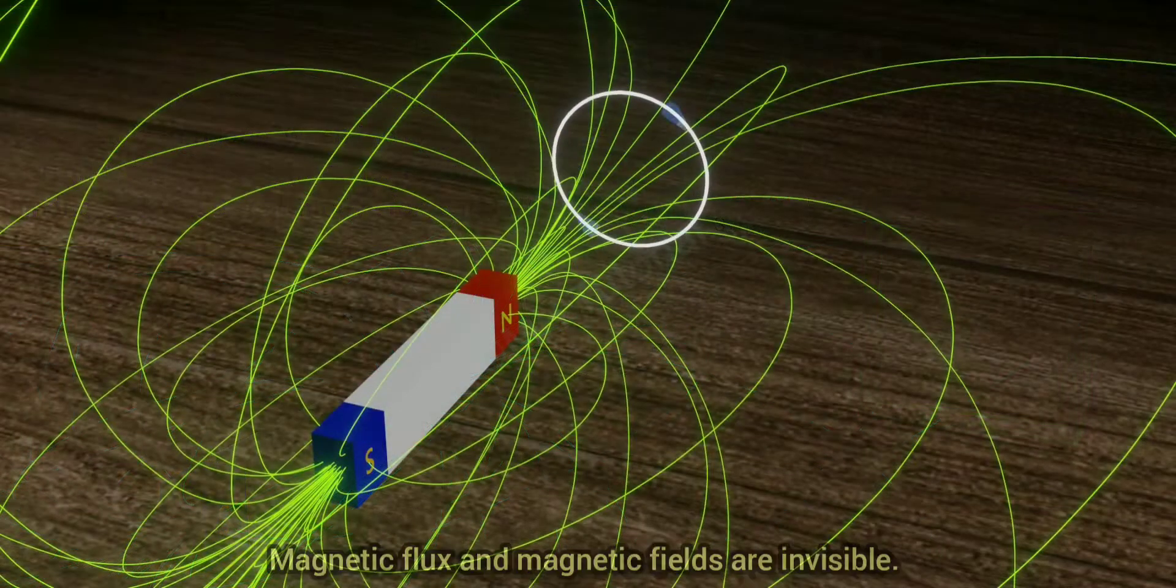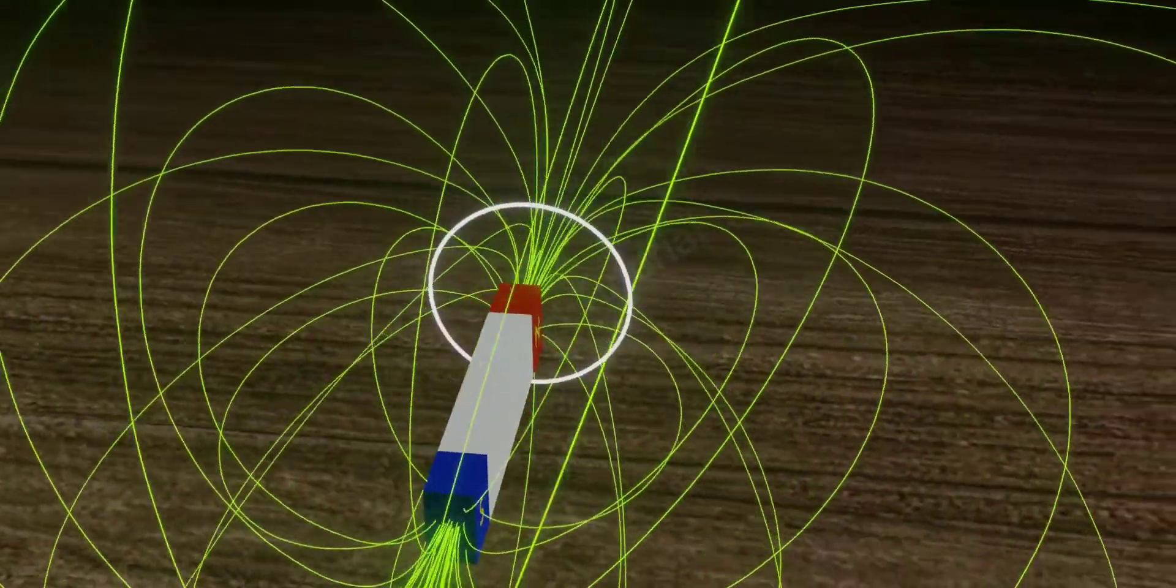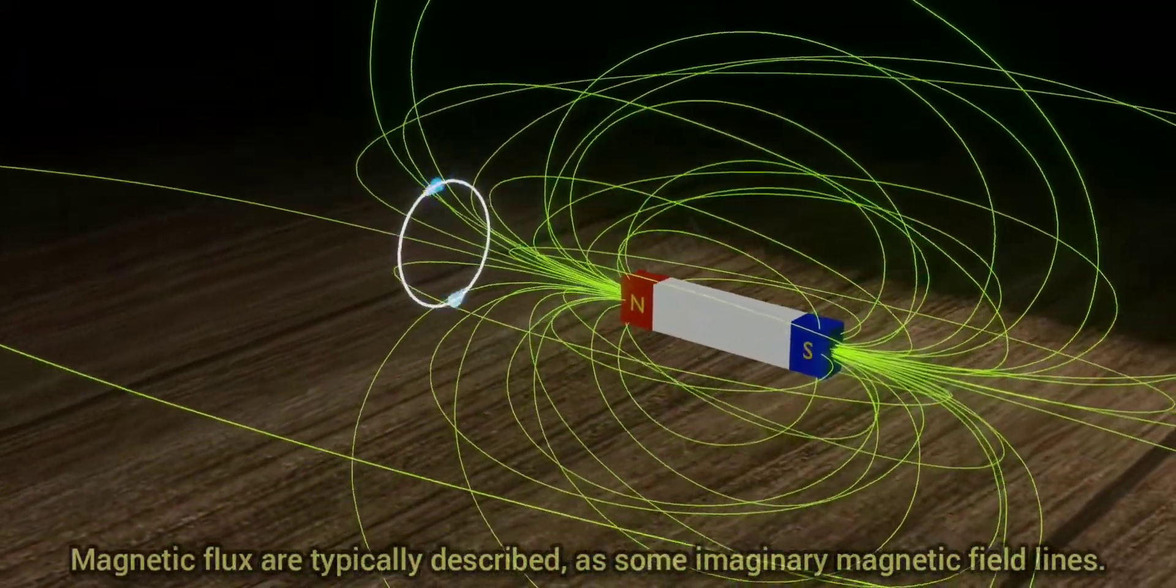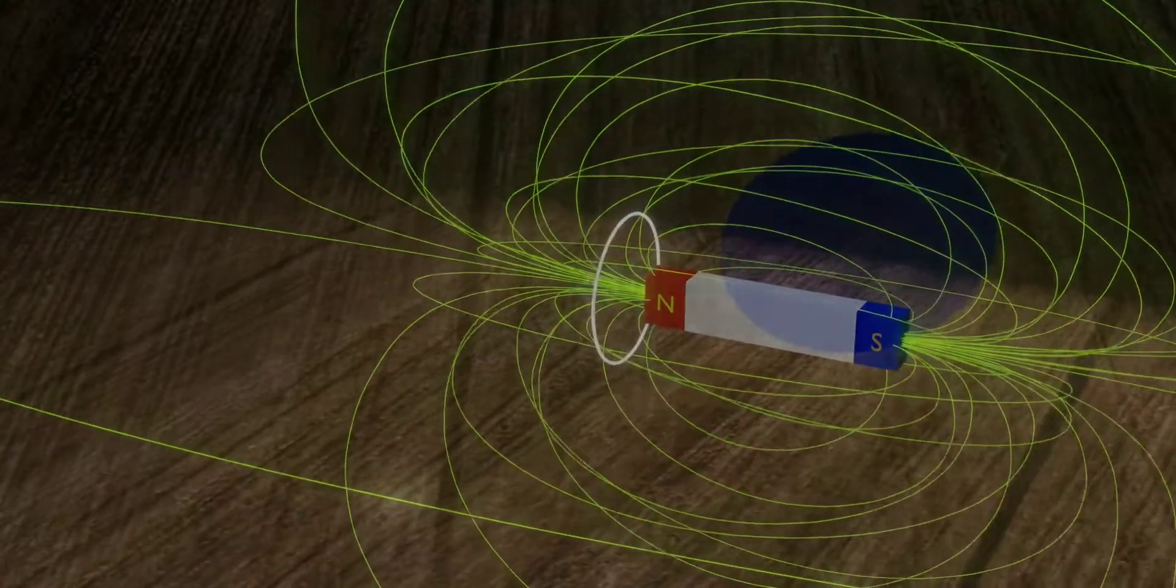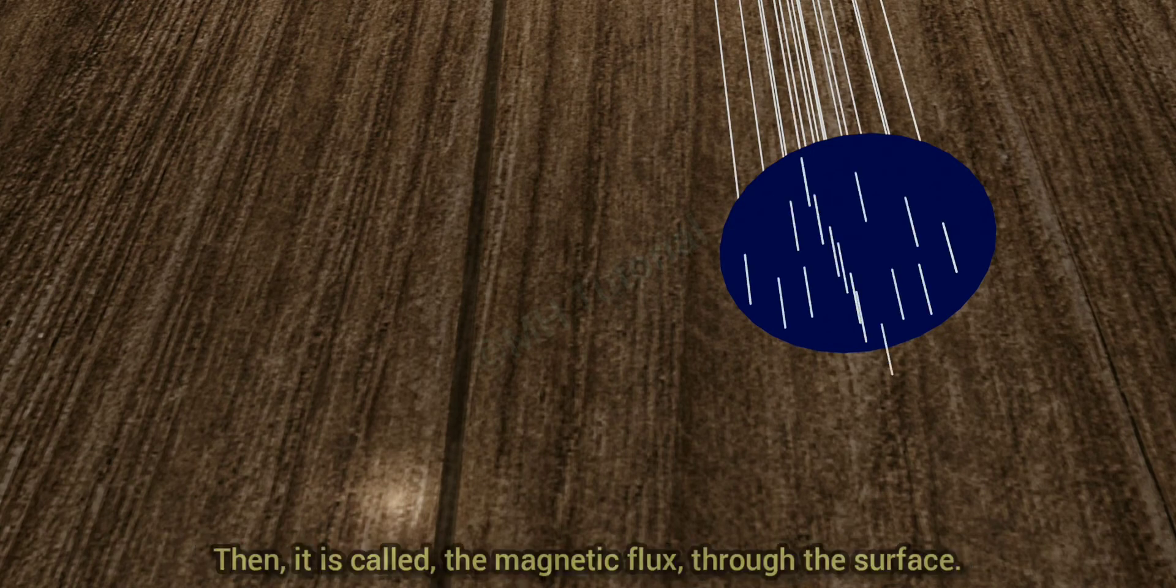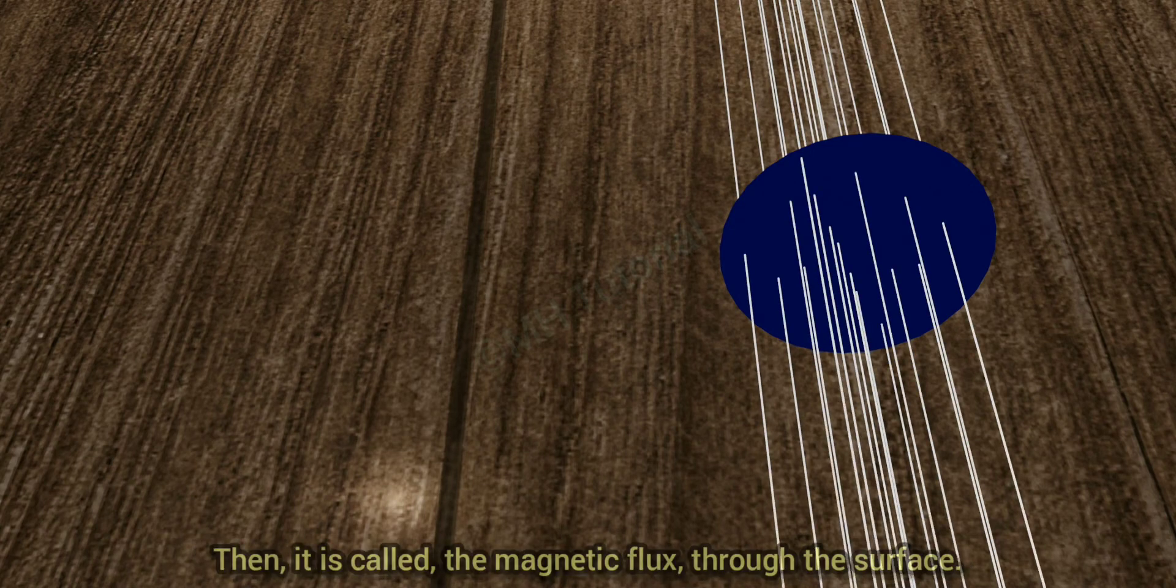Magnetic flux and magnetic fields are invisible. Magnetic flux are typically described as some imaginary magnetic field lines. When these lines pass perpendicularly through a surface, it is called the magnetic flux through the surface.